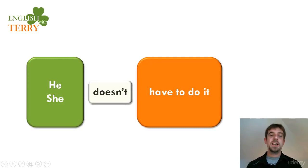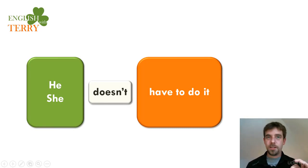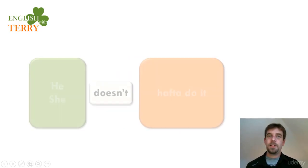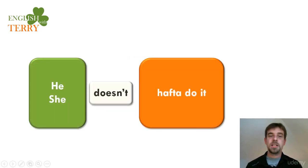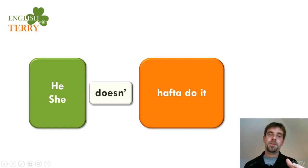Negative: he or she doesn't have to do it. In the negative, he or she does not — doesn't — have to do it. You need to be ready for the previous pronunciation in the negative as well. He or she doesn't have to do it. These are the pronunciation tricks for when we have the word have, to, and a verb.